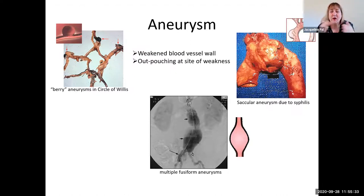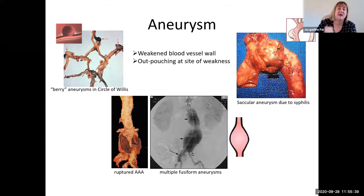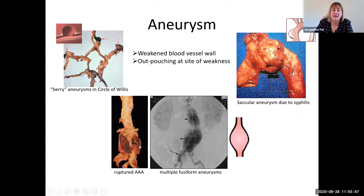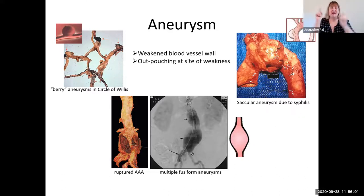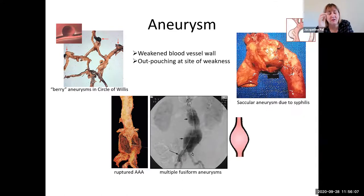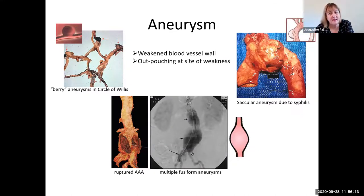In addition to rupturing and having a massive bleed, sometimes it's just the wall of the blood vessel itself that ruptures, and you can see blood between the layers. Ruptured abdominal aneurysms are not good. Sometimes they're incidentally picked up on abdominal x-ray because of calcifications — you can see the outline of the aneurysm — and sometimes they're picked up on physical exam because when palpating the abdomen, there should not be any pulsatile masses.